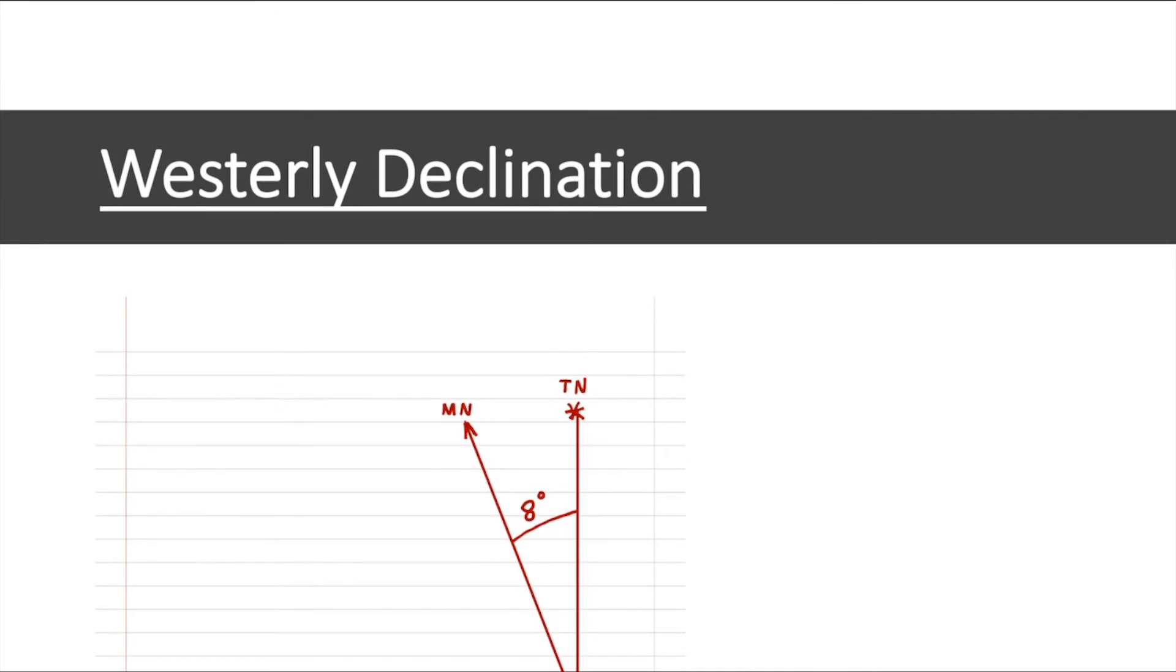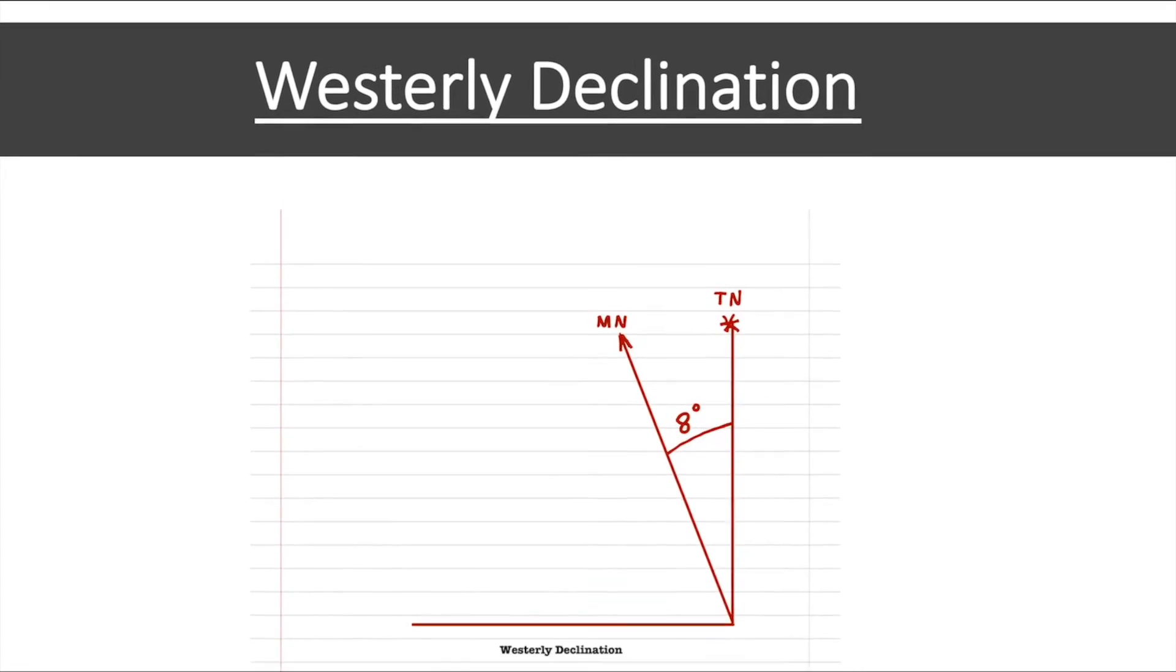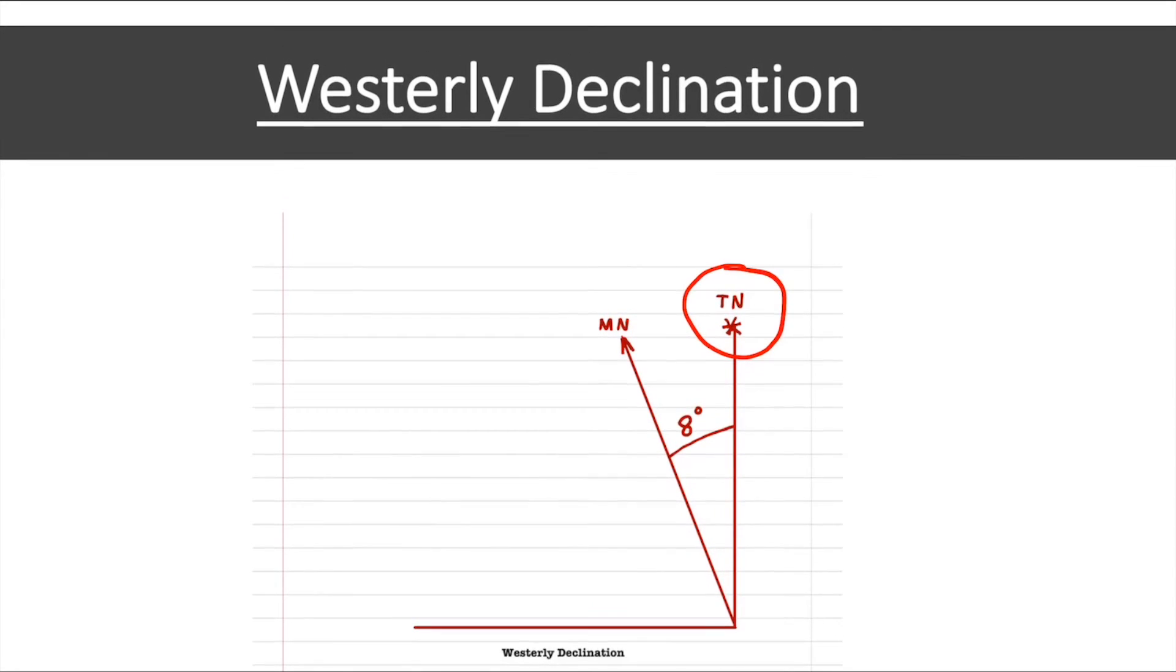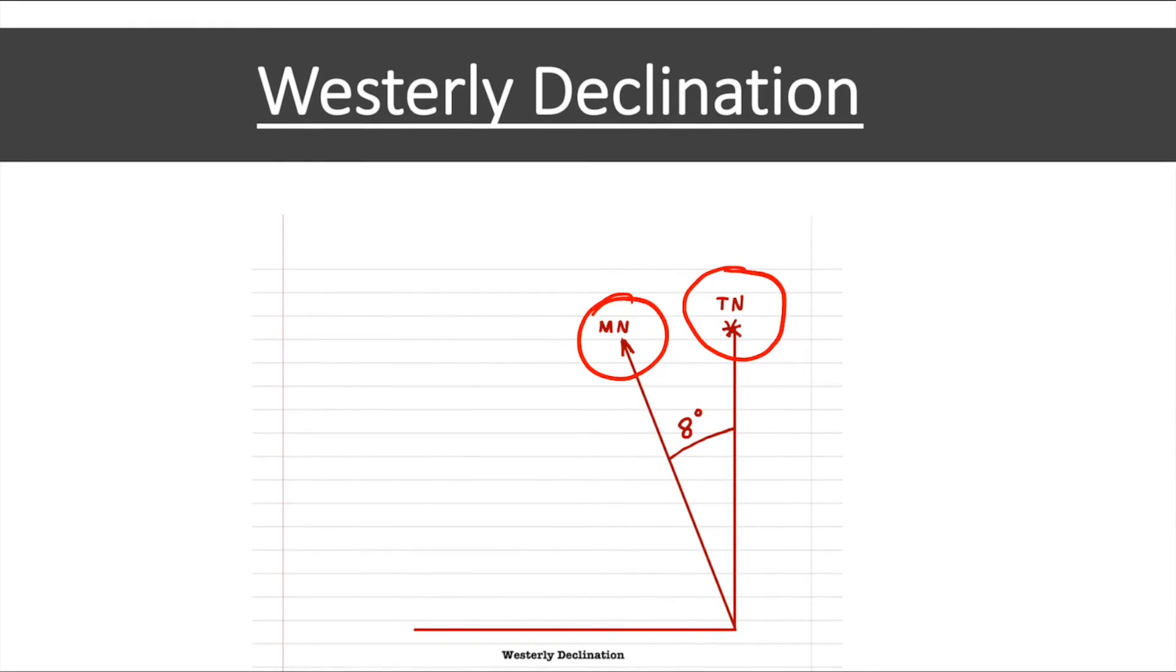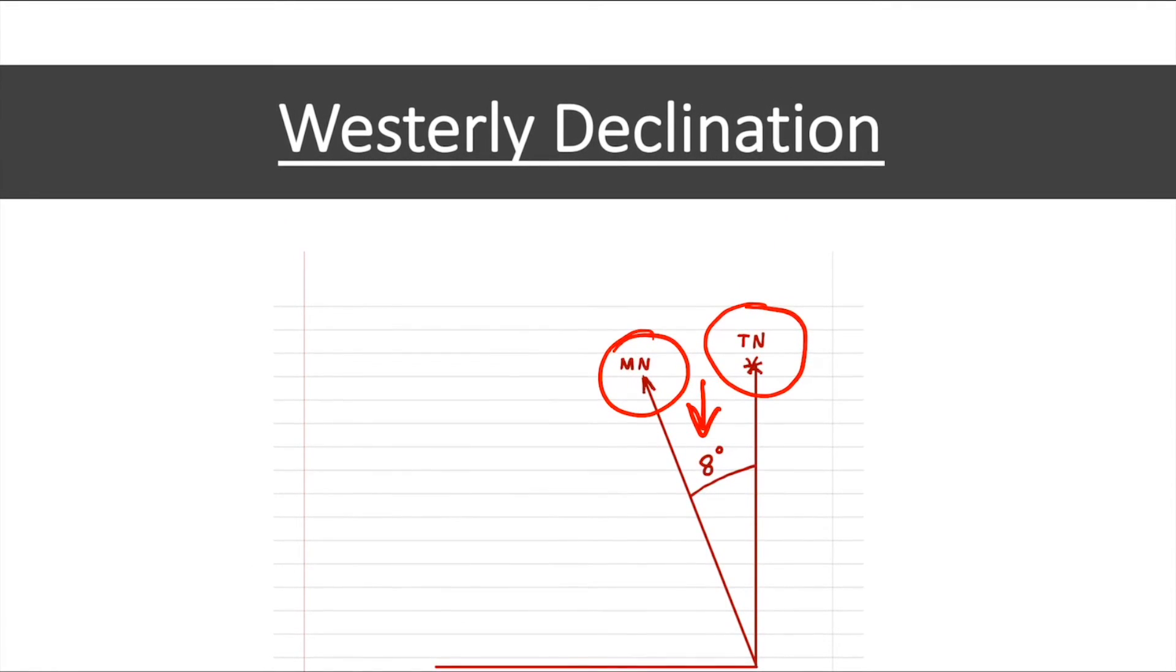Westerly declination. Here you noticed we have true North and magnetic North. Magnetic North is to the left of true North and it's pointing in a westerly direction. So we have a westerly declination. And here we have 8 degrees.